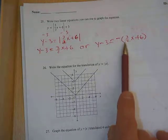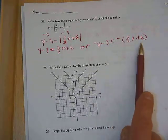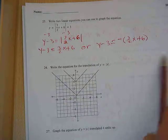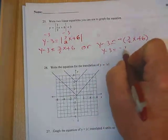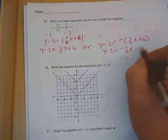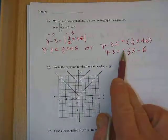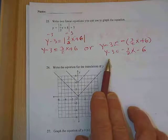Common algebra mistake number 1: students distribute it to the 3 halves x and not to the 6. So continuing with this side, I get y minus 3 equals the opposite of 3 halves x minus 6. Minus, minus.